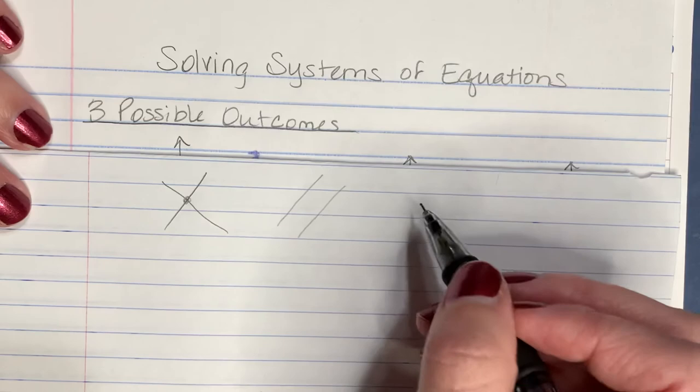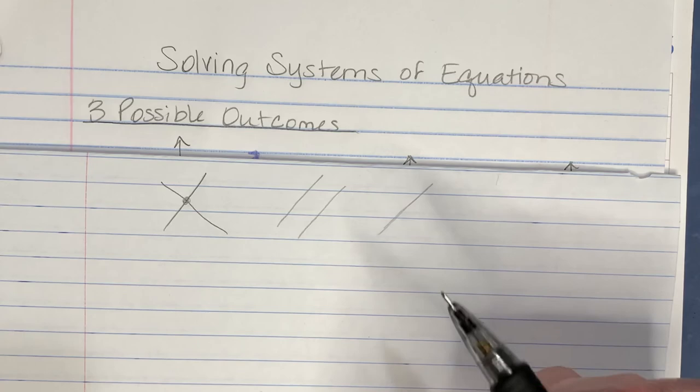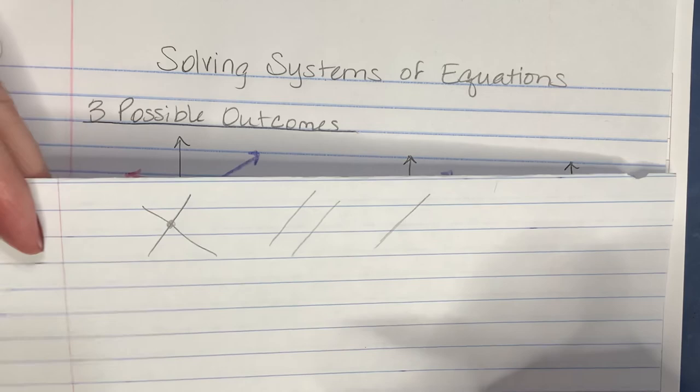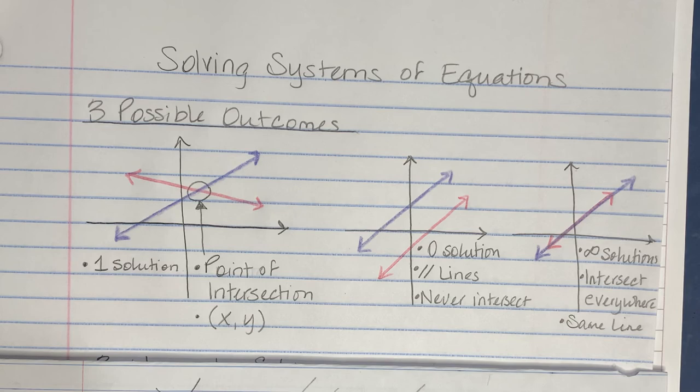The third option is really kind of hard to think about, but what if you graph one line and then you graph the other line right on top of it? They're actually the same line — different equations to represent the same line. So there are three possible outcomes.